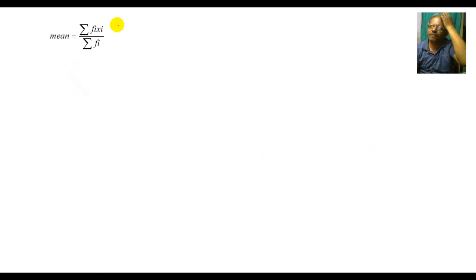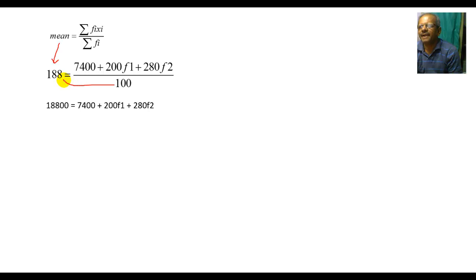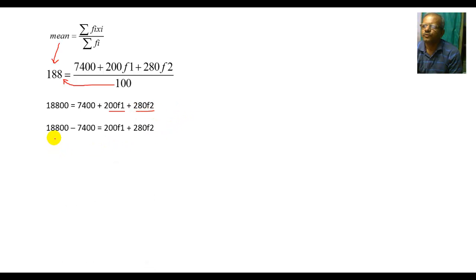Apply the mean formula: mean = Σfi·xi / Σfi. With mean = 188 and Σfi = 100: 188×100 = 18800 = 7400+200F1+280F2. Shifting 7400: 11400 = 200F1+280F2.